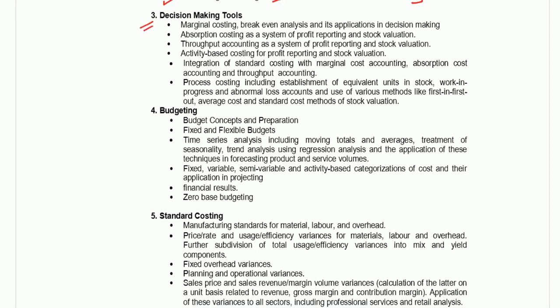The third topic under cost and management accounting is decision-making tools. Here they are asking marginal costing, absorption costing, throughput accounting — which is a small manageable topic — ABC costing, integration of standard costing and marginal costing, and process costing. Out of these, marginal costing, absorption costing, and process costing are the most important — you should have good knowledge of these three topics.